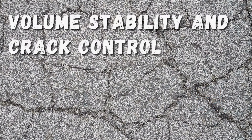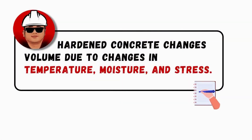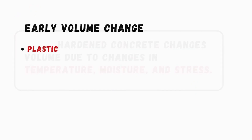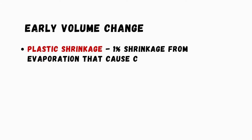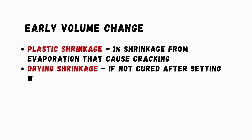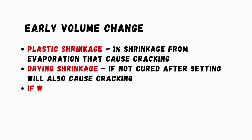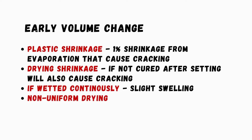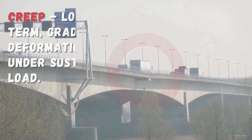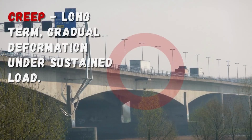Volume Stability and Crack Control: Hardened concrete changes volume due to changes in temperature, moisture, and stress. The effects of early volume change include plastic shrinkage, drying shrinkage, slight swelling, and curling. Concrete under sustained load will deform elastically — this is called creep.